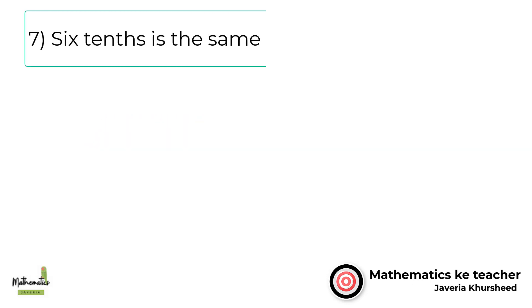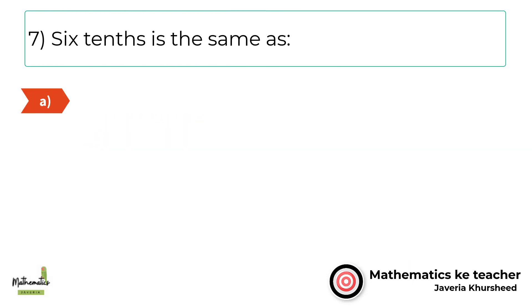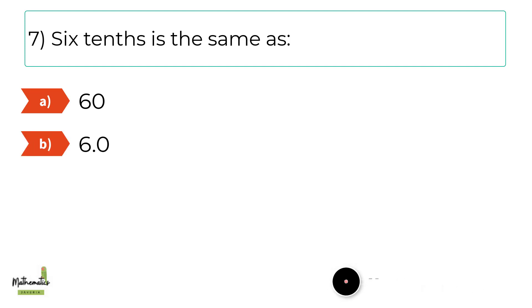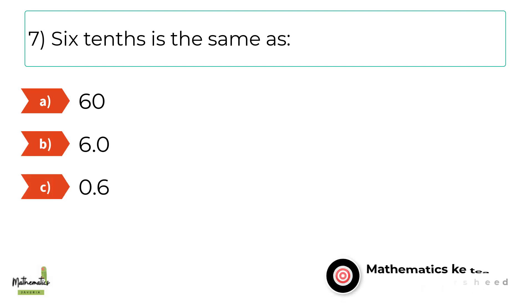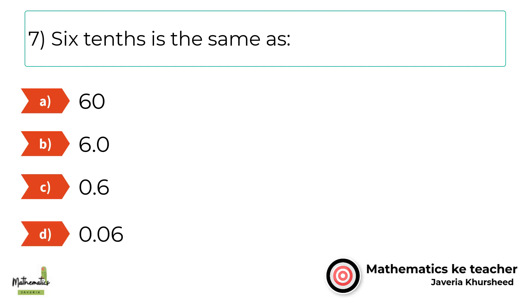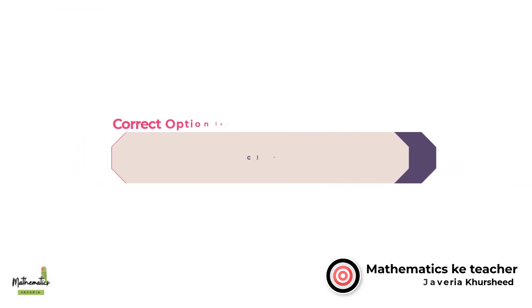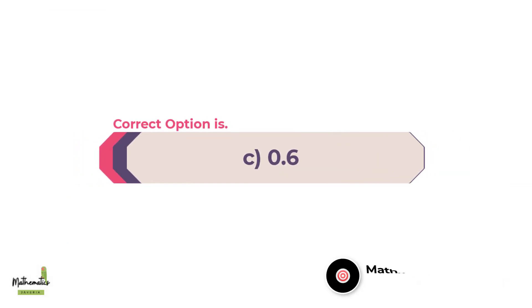Number 7. 6 tenths is the same as. A. 60. B. 6.0. C. 0.6. D. 0.06. Correct option is C. 0.6.